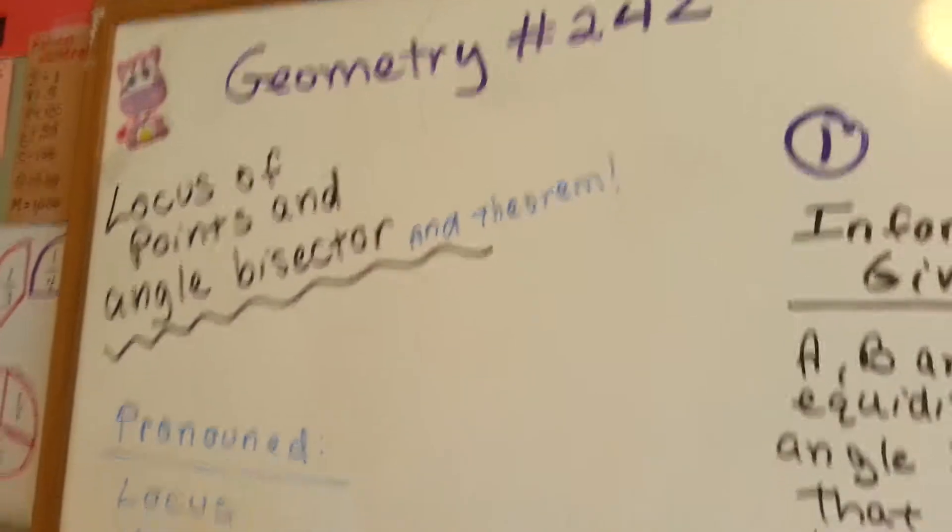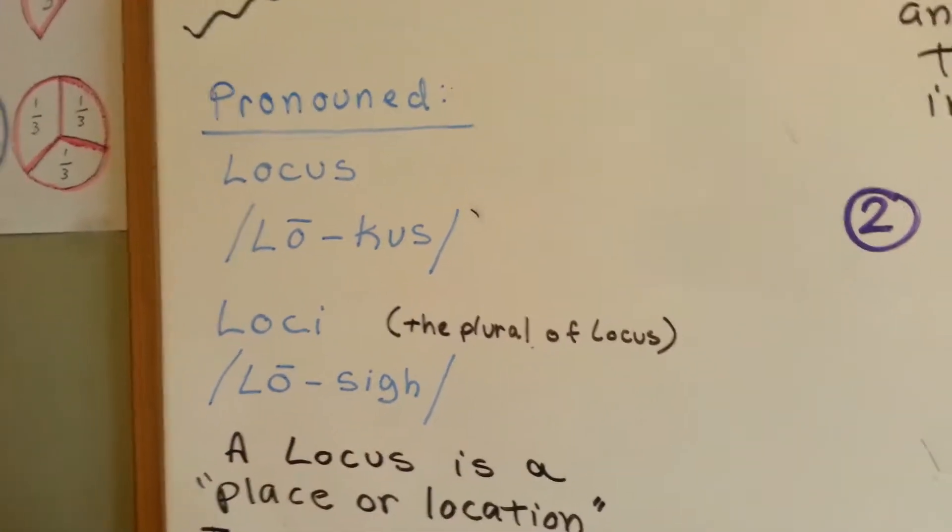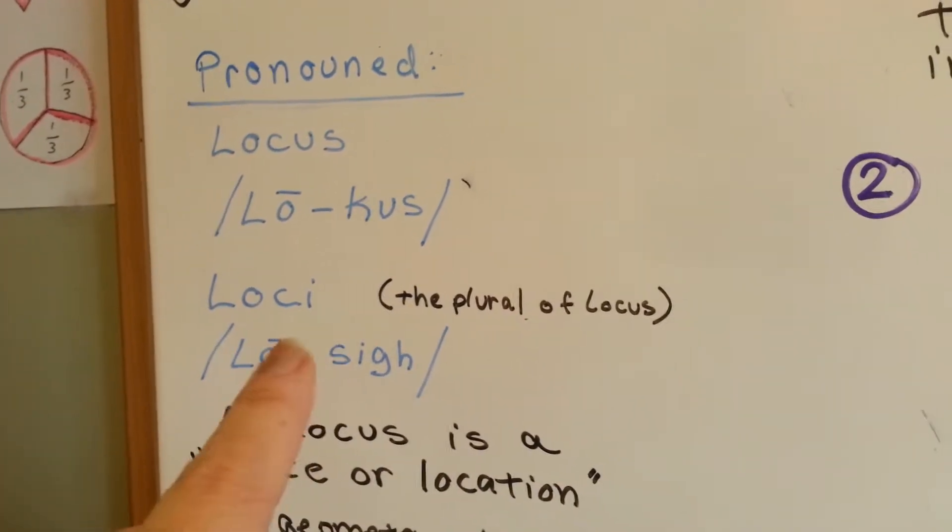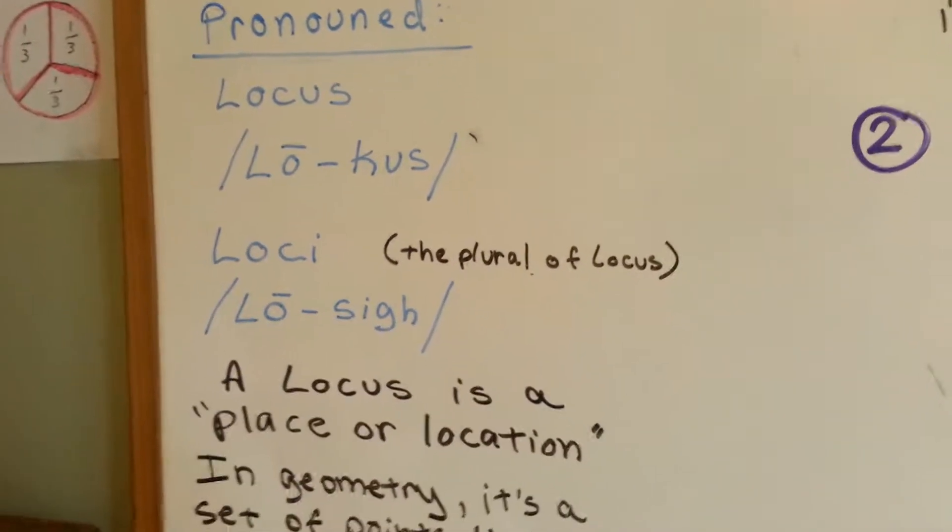We discussed in the previous video that it's pronounced locus, and this is pronounced loci. Some people do pronounce it loci, but it is loci. C-I says 'si' as in city and circle, alright? And that's the plural of locus.